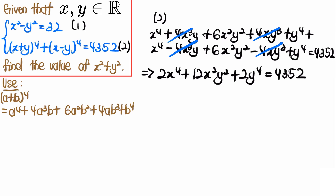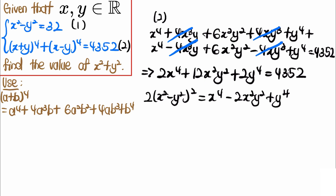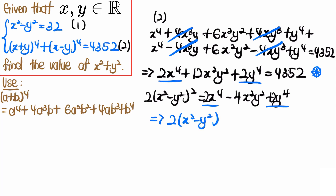Can we combine this with the first equation? Well, this looks very similar to the square of (x²−y²), which equals x⁴ minus 2x²y² plus y⁴. Multiplying by 2 gives 2x⁴ minus 4x²y² plus 2y⁴. We can see those terms match. We rewrite the equation as 2(x²−y²)² plus 16x²y² equals 4352.